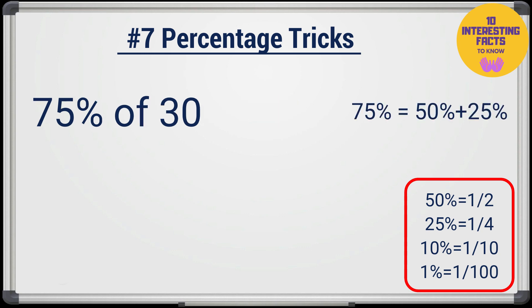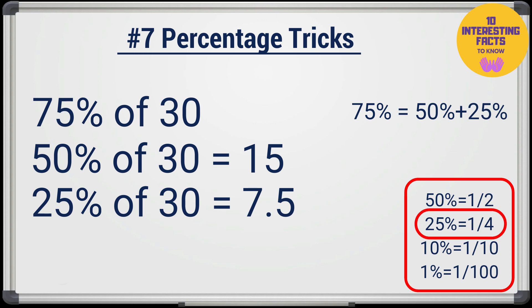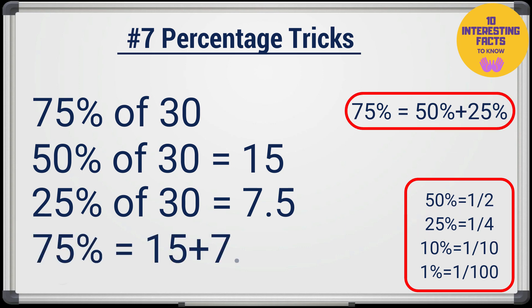Let's try 75% of 30. 50% of 30 is 15, that is half. 25% is 7.5, that is half of 15. So 75% is 15 plus 7.5 which is 22.5. And the next tip will definitely surprise you.